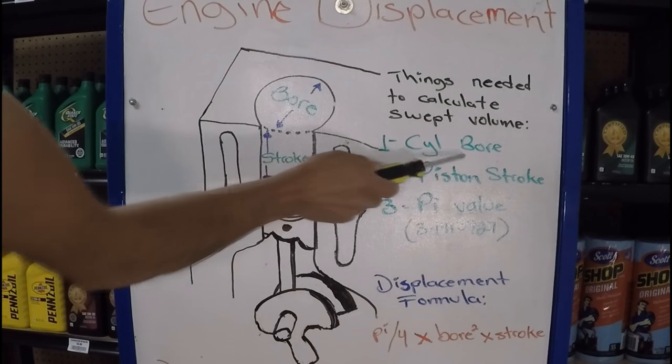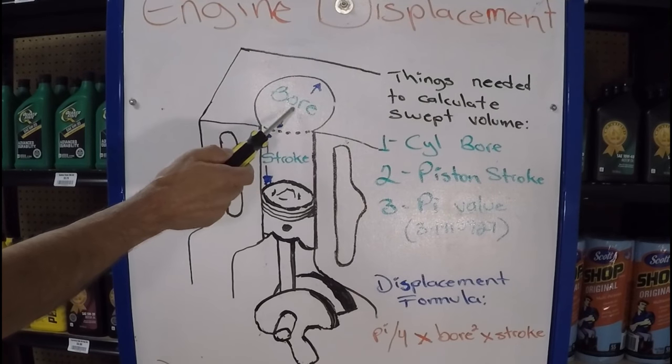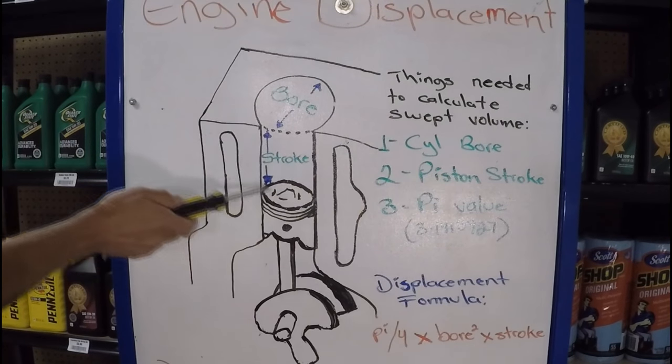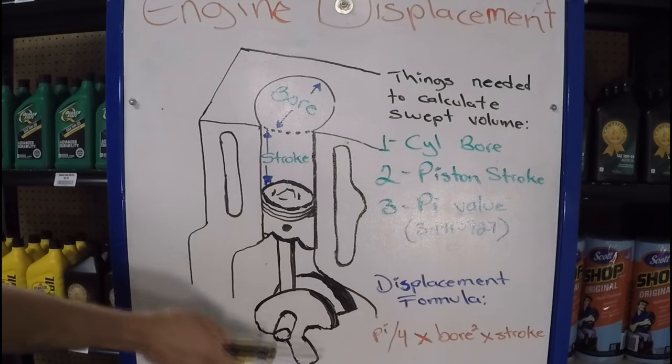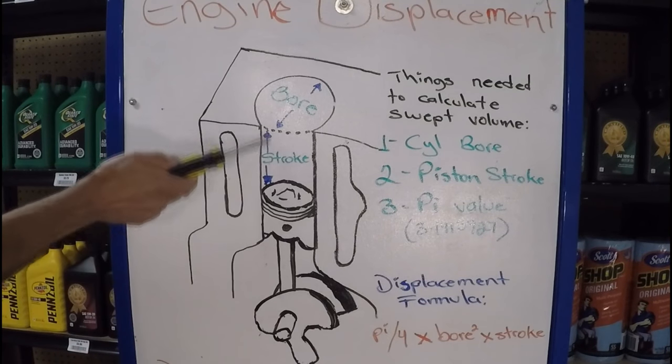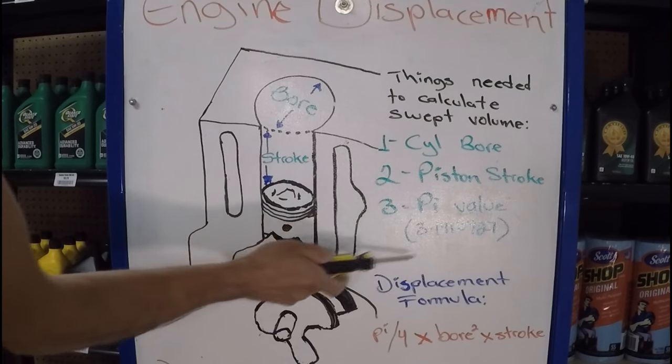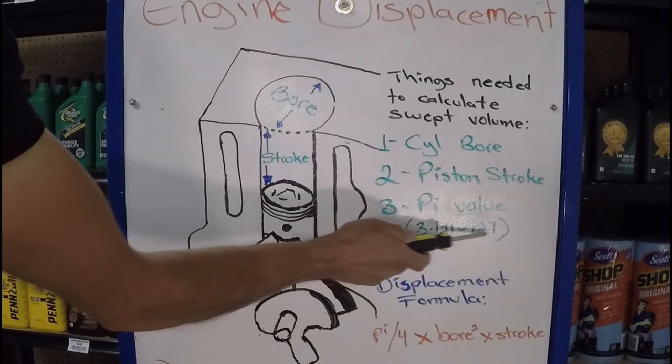The first one is going to be cylinder bore, which is the diameter of the cylinder. Then you're going to need the piston stroke, which is how far the piston travels up and down every time the crankshaft rotates. And you're going to need the pi value, which is 3.1415927.